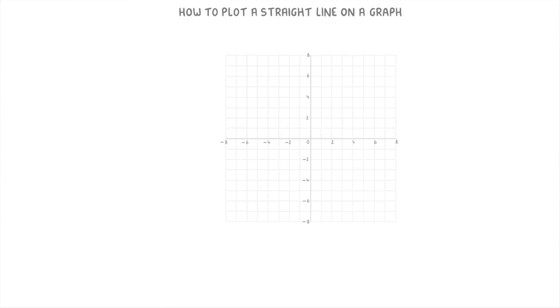In today's video, we're going to look at how you can plot a straight line on a graph. There's a few different ways that you can do this, but in general the easiest way to do it is to find the two points where the line will cross the axes and then use these two points to form your line.